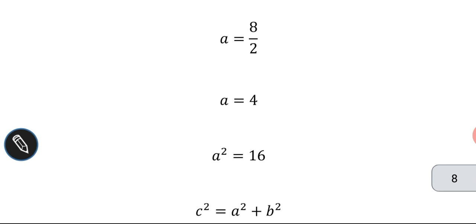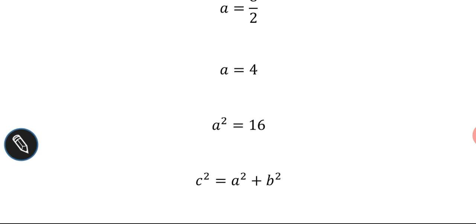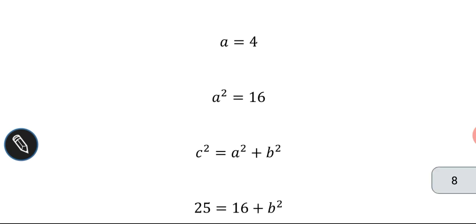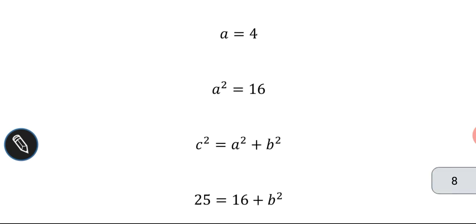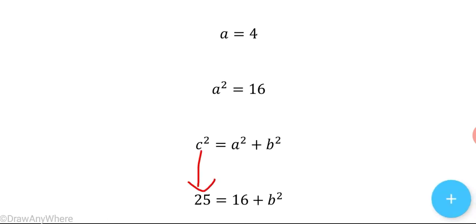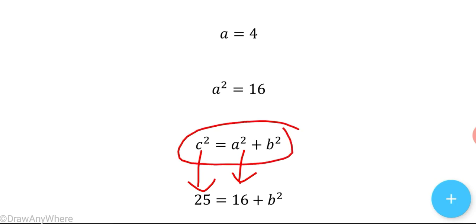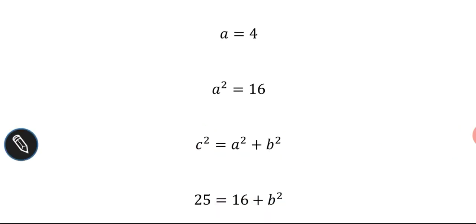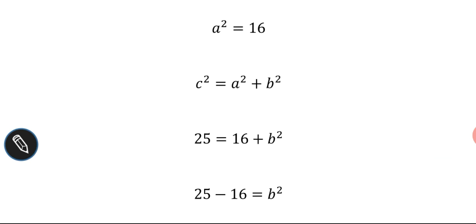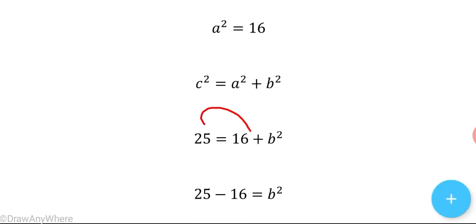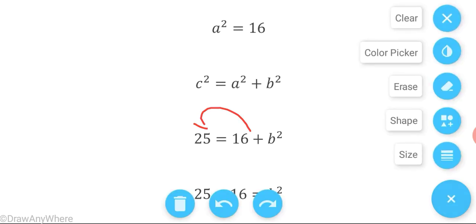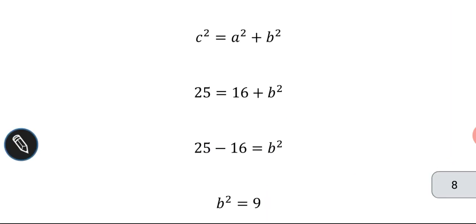So a squared is equal to 16. Now the relation between a, b, and c for a hyperbola is c squared equals a squared plus b squared. With c squared equal to 25 and a squared equal to 16, substituting: 25 equals 16 plus b squared. Moving 16 to the other side: 25 minus 16 equals b squared, so b squared equals 9.